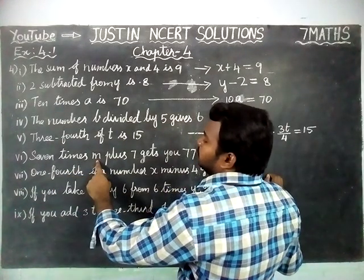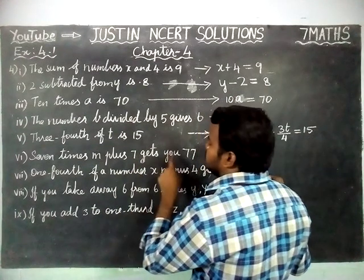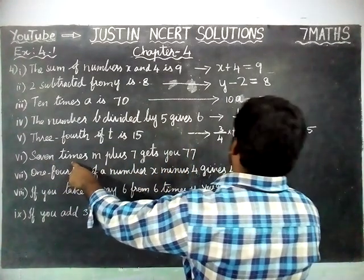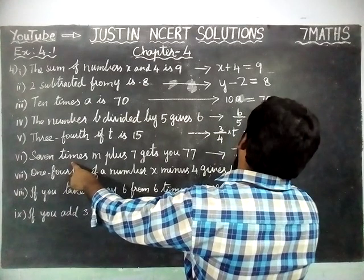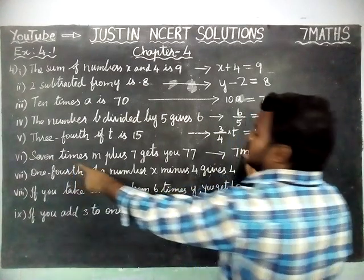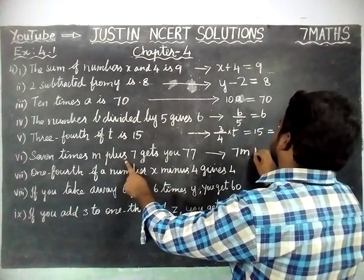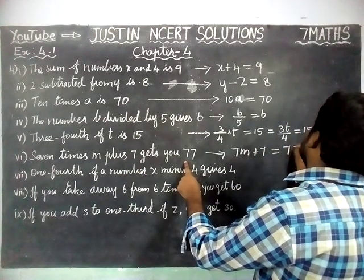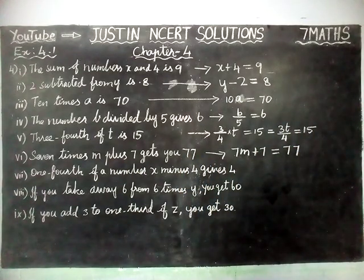Sixth question: 7 times M plus 7 gives you 77. '7 times' means we multiply. So 7M plus 7 is equal to 77.